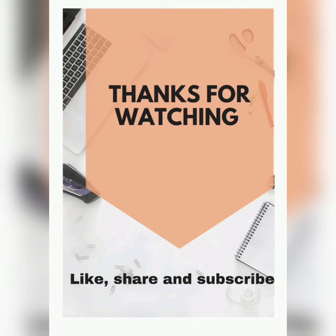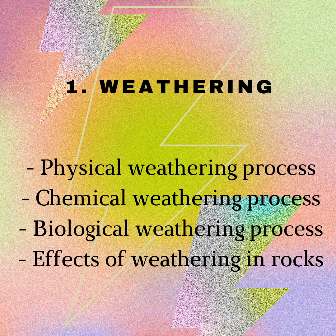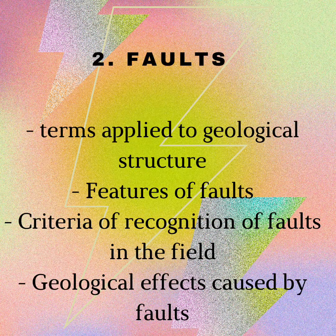Let's get into this video. In this video I'm giving the course outline of Geotechnology 2, Module 2. Topic one is Weathering — under that you'll have physical weathering process, chemical weathering process, biological weathering process, and lastly the effect of weathering on rocks.